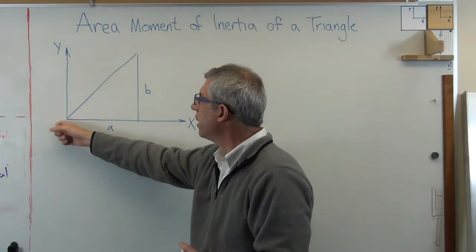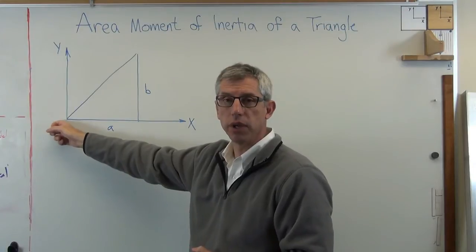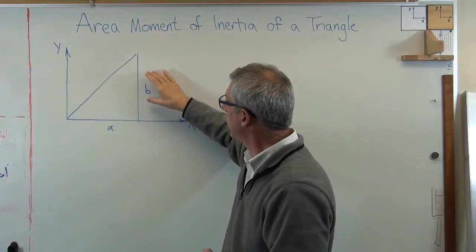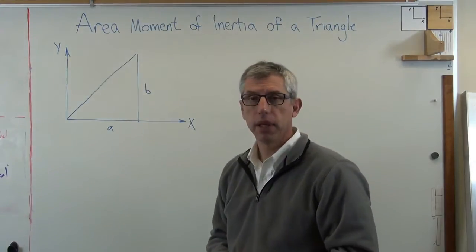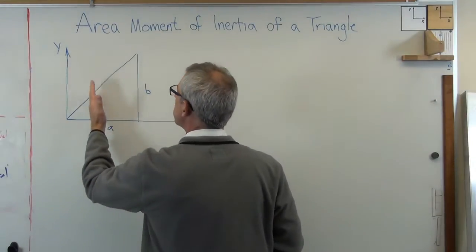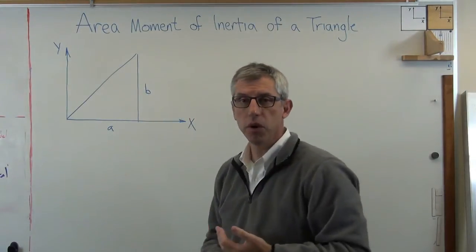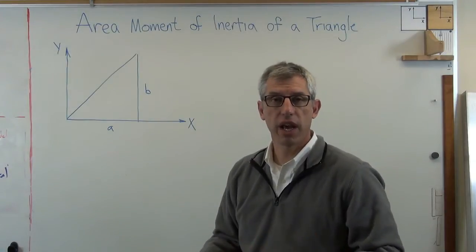I've got a triangle with the apex at the origin of the coordinate system here, and I've got height B and width A. What I'm going to do is show you how to cut this up into slices.